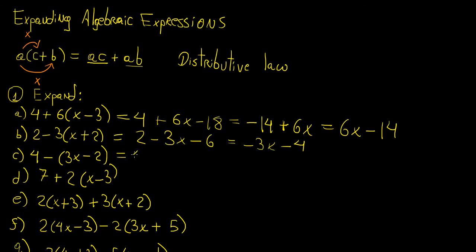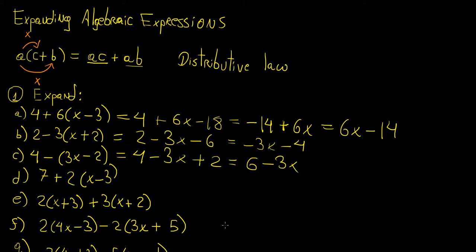Here we have 4 minus 3x, and then minus minus 2, so those two negative signs are going to become positive. So this is going to turn into 6 minus 3x.